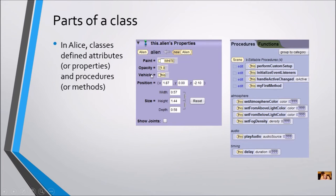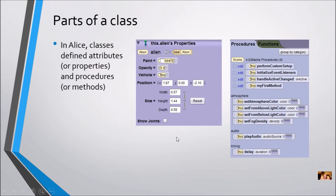In ALICE, the parts of a class defined the properties — what the object looked like — and its procedures, what it could do, and also its own functions. The procedures weren't the same for every class. The props weren't going to do the same thing as a quadruped. All of that was defined in the class.